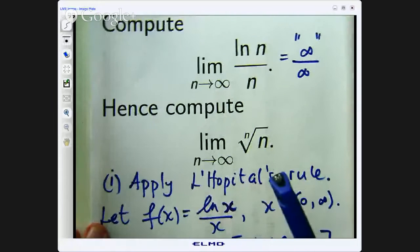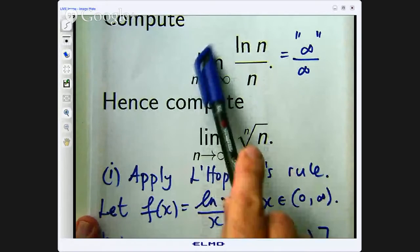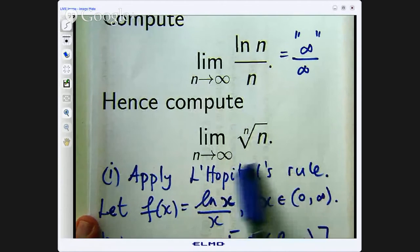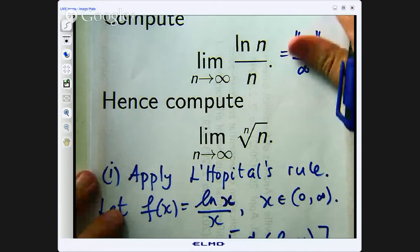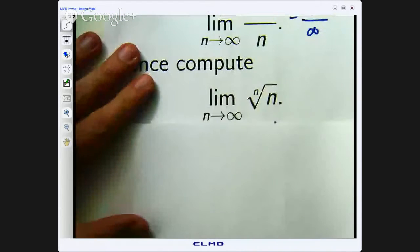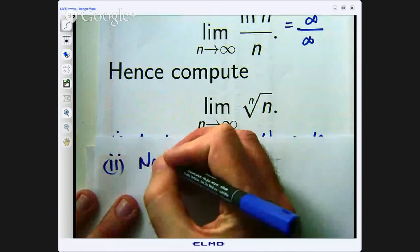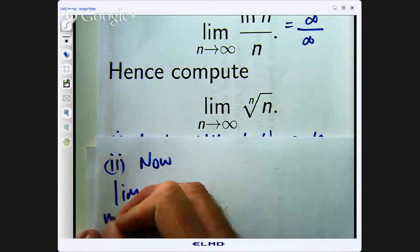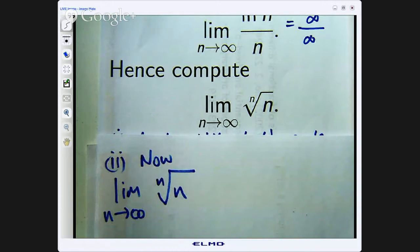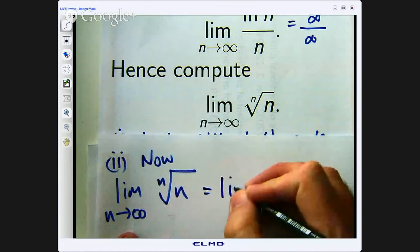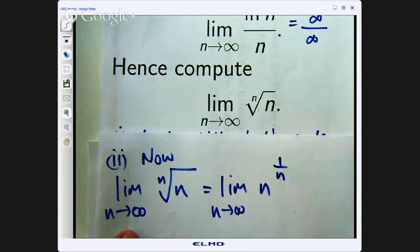Okay, so compute this limit. We got that limit to be 0. Hence compute this limit. So why do we want to know this limit? So we can use it, so we can do something with it to get this limit. Okay, the nth root of n. So let us have a look at this. So let us take the limit of the nth root of n. So as n gets large and positive what happens to this? Well let us write it in the following way. Just a little bit of manipulation. The nth root can be written as power 1/n.